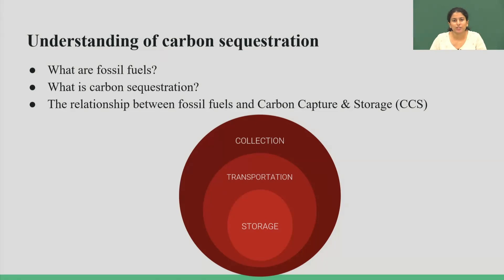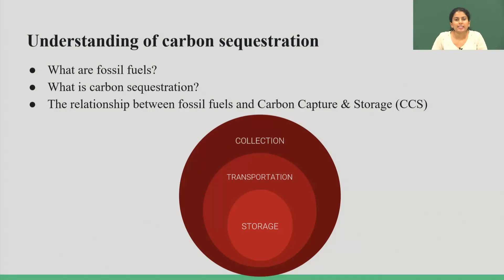Carbon sequestration majorly takes place in three processes. CCS stands for carbon capture and storage. If you take a look at the diagram, the carbon is first collected through its derivatives such as carbon dioxide, then transported to an ideal source, and then stored in that source. CCS is available through natural sinks such as trees or forests, but can also be human-made sinks, which we will explore further in the presentation.